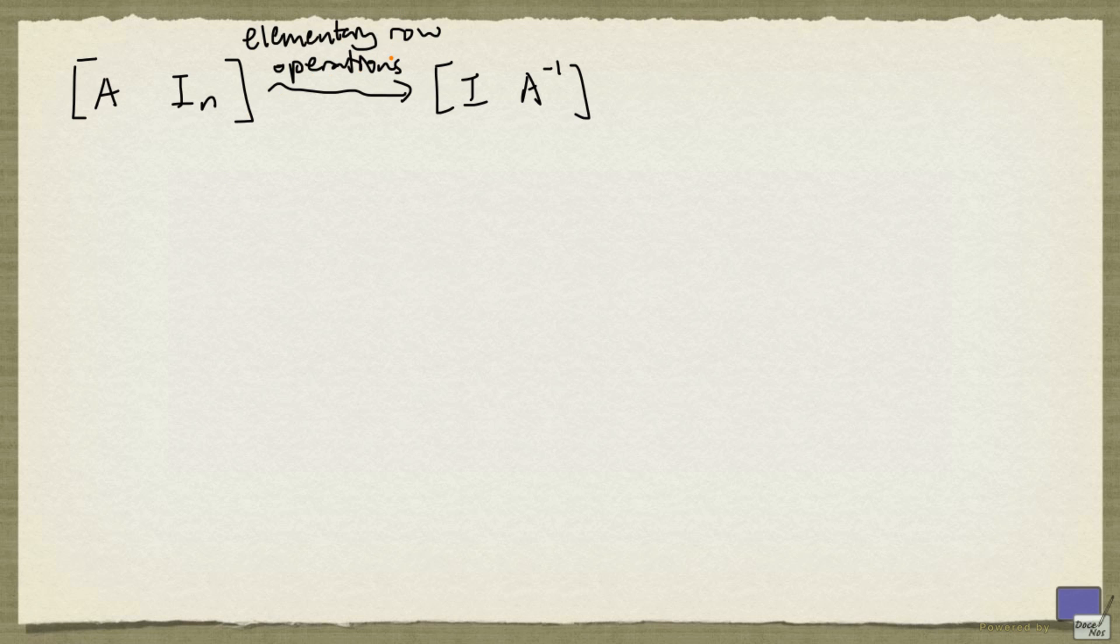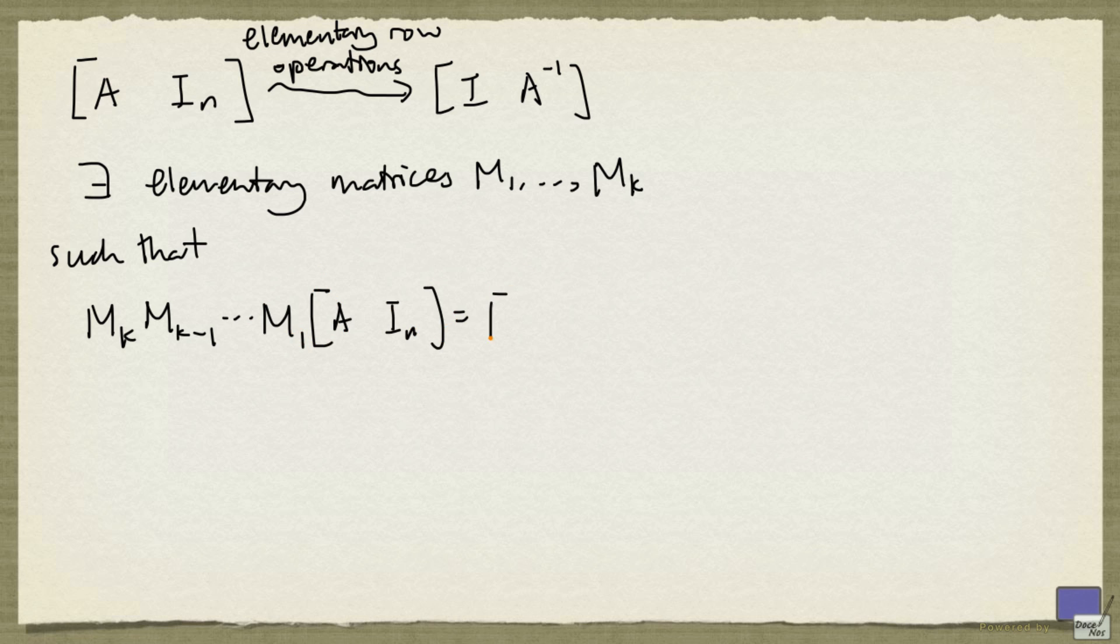Because we are performing elementary row operations, there exists elementary matrices M1 up to Mk, such that Mk times Mk minus 1 down to M1 times this matrix is precisely this matrix.